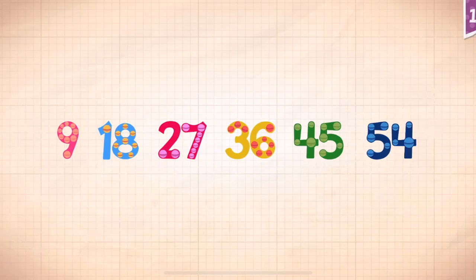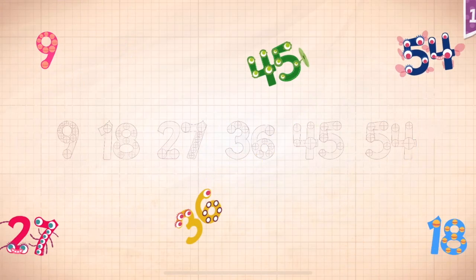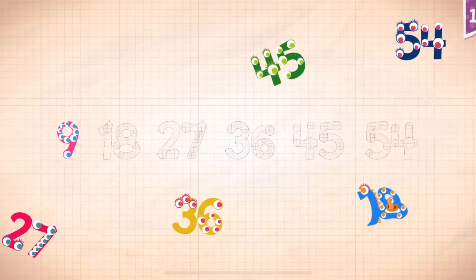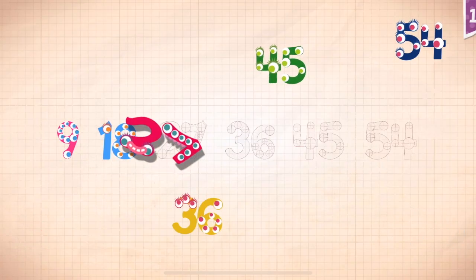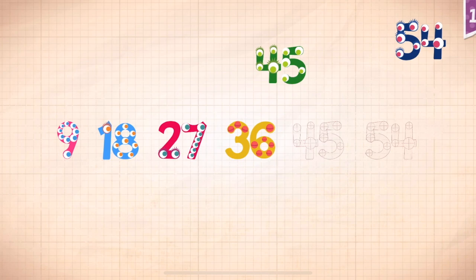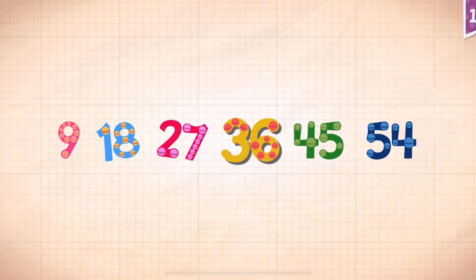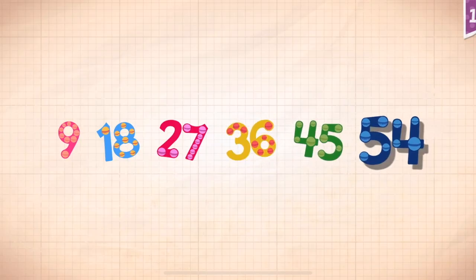Count by 9s: nine, eighteen, twenty-seven, thirty-six, forty-five, fifty-four. Nine, eighteen, twenty-seven, thirty-six, forty-five, fifty-four. Nine, eighteen, twenty-seven, thirty-six, forty-five, fifty-four.